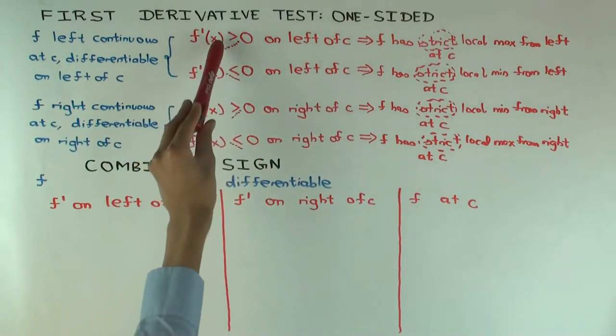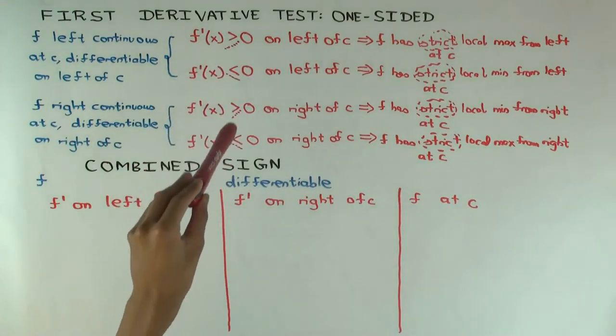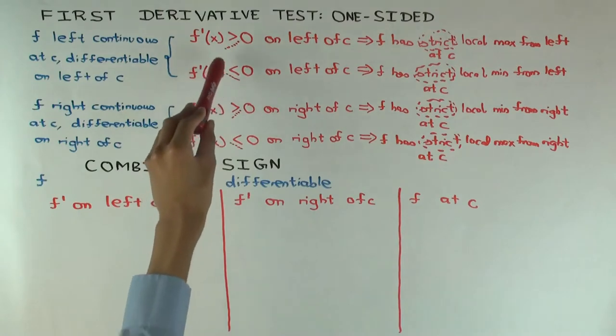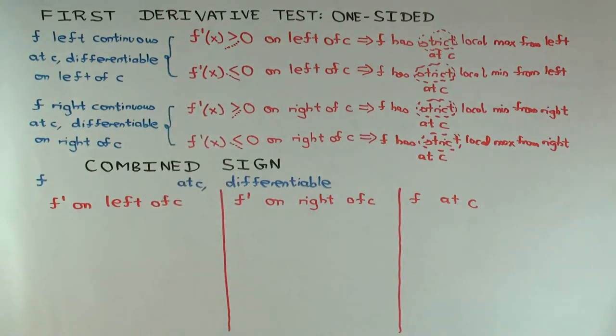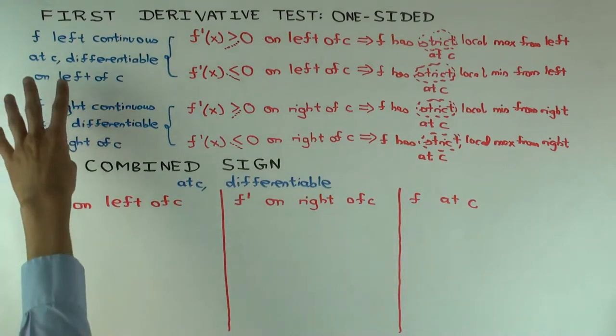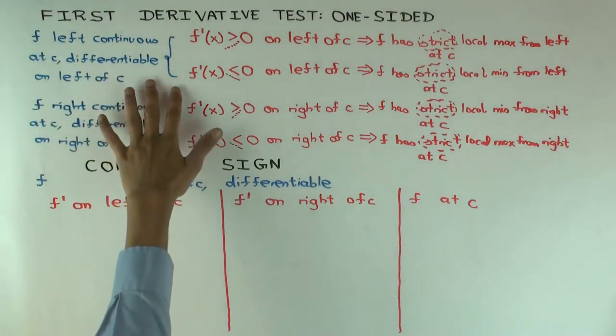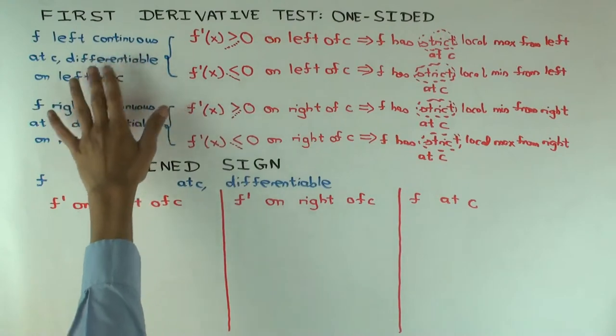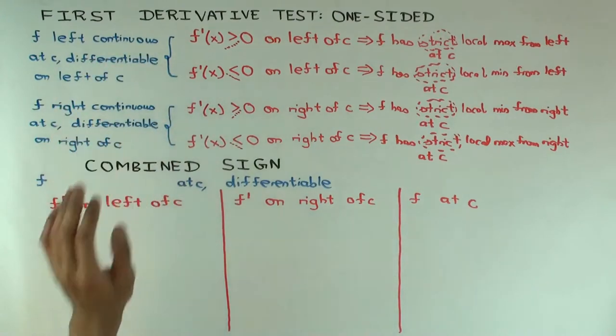Okay, I'm just going to consider a case of strict inequality. So I want f'(c) equal to zero and strict local maximum. Now you see here from the above that for the first derivative test on the left side, we made some assumptions. And for the first derivative test on the right side, we made some assumptions.